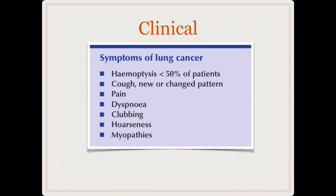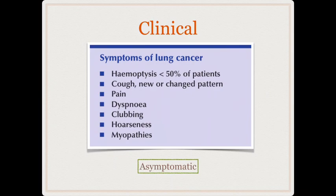About 50% of patients will have hemoptysis; patients may also have cough, dyspnea, clubbing, hoarseness of voice, and myopathies like Eaton-Lambert syndrome. But the most common clinical presentation of lung cancer is that the patient will be asymptomatic. We are emphasizing that if a patient comes with cough or any respiratory symptoms, you should have a high index of suspicion and a low threshold for ordering CT scan, otherwise we will pick up these patients only in very late inoperable stages.